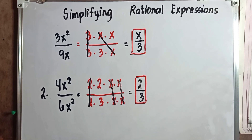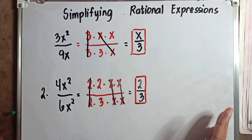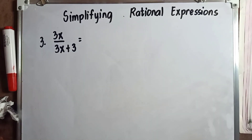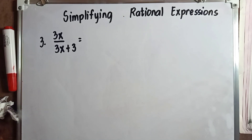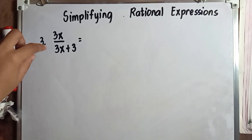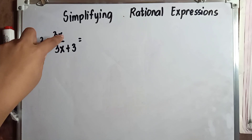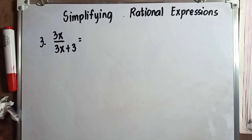But how about when we deal with more complex polynomials in a rational expression? Take note that when dealing with polynomials, we need to follow the steps first before canceling the common factor. We need to factor out the numerator and the denominator.